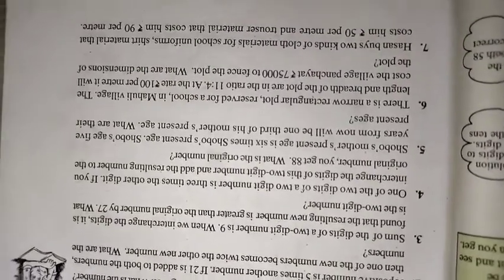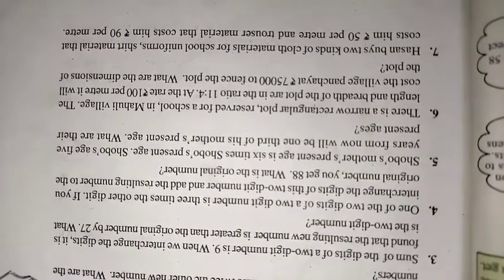Question 6: There is a narrow rectangular plot reserved for a school in Mowli village. The length and breadth of the plot are in the ratio 11:4. At the rate of ₹100 per meter, it will cost the village panchayat ₹75,000 to fence the plot. What are the dimensions of the plot? We will do this question in the next session. This is your homework — please complete it. Thank you.